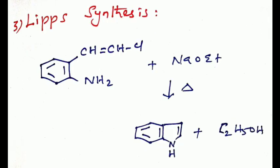Third technique, Leimgruber-Batcho synthesis. Here ortho amino chlorostyrene combined with sodium ethoxide at high temperature gives indole with loss of ethanol.